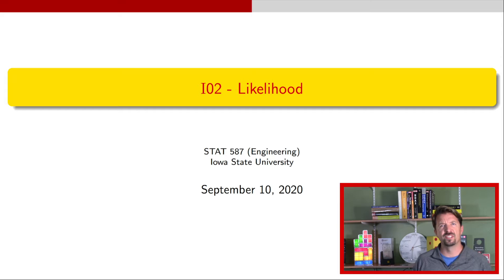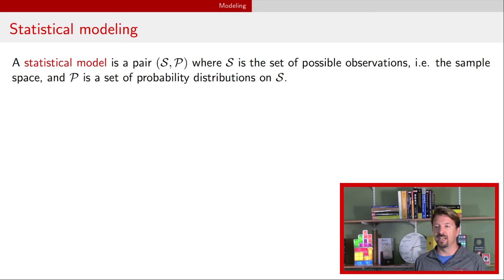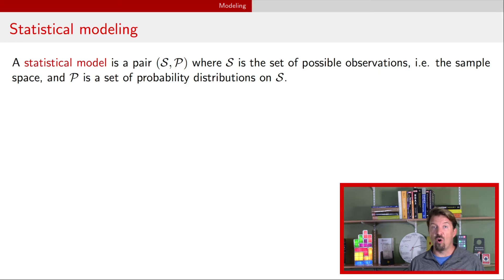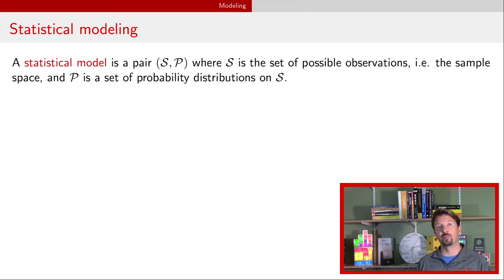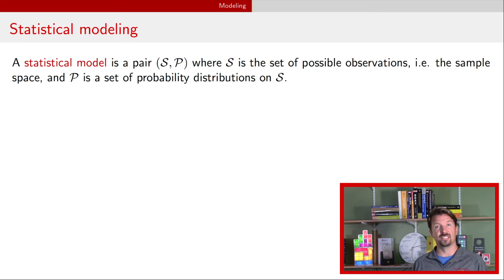So let's talk about statistical modeling. What I mean formally by statistical modeling is that you have a pair — call it script P and script S — for a set of possible observations. Script S is going to determine the sample space of the experiment, that is what are all of the possible results that could have been observed. Script P is going to be a collection of probability distributions that describe the probability of those outcomes in the sample space.